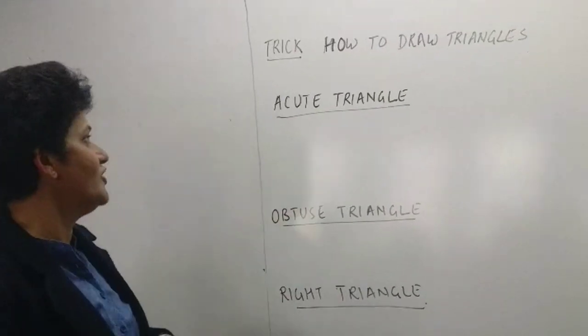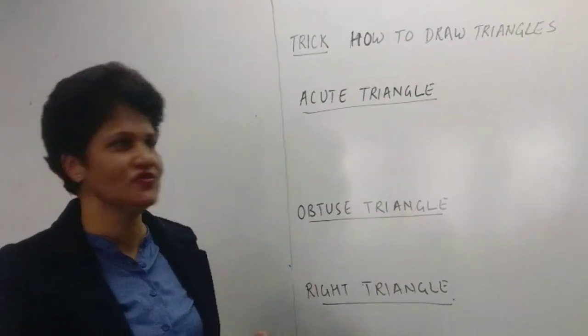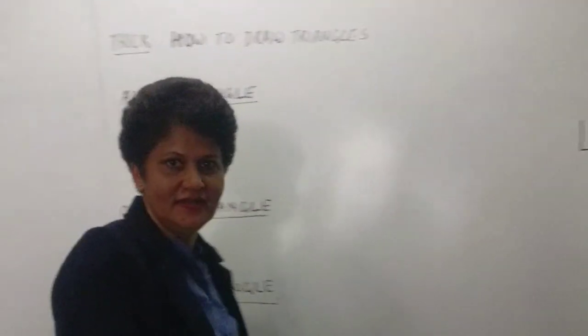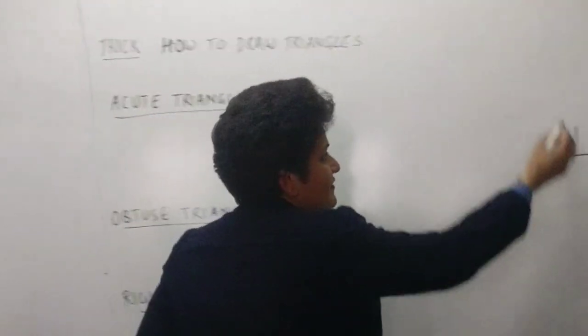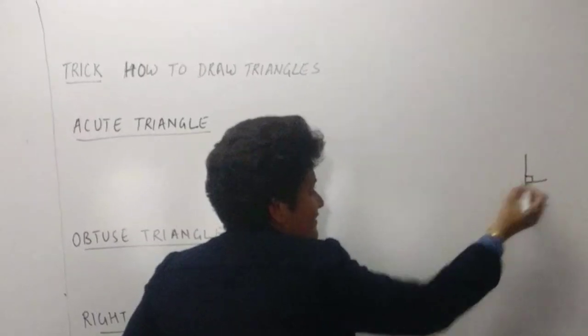So what you have to do is remember, earlier I told you how to draw angles using the alphabet L. So when you use this alphabet L, right, this alphabet L straight makes a 90 degree angle.